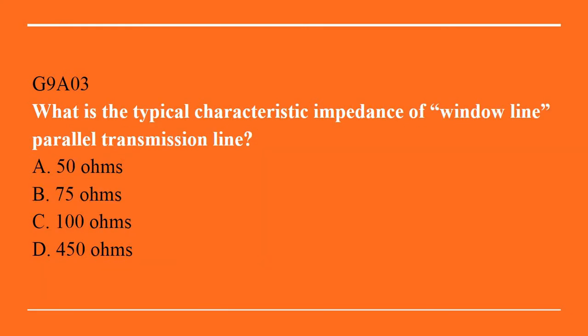G9A03: What is the typical characteristic impedance of window line parallel transmission line? A. 50 ohms. B. 75 ohms. C. 100 ohms. Or D. 450 ohms. The answer is D, 450 ohms.